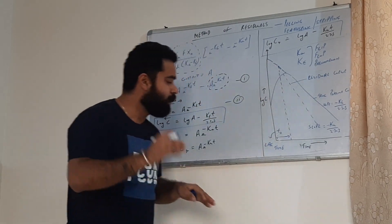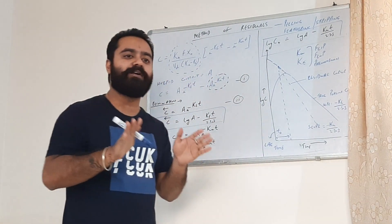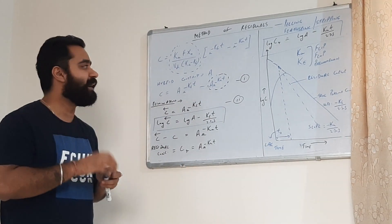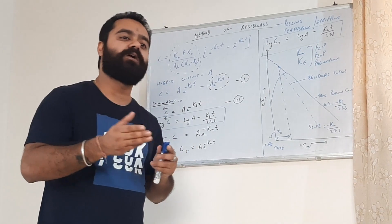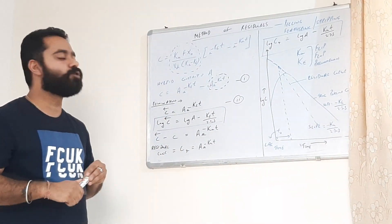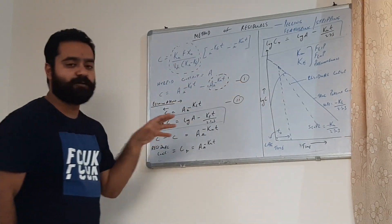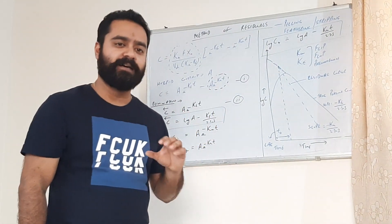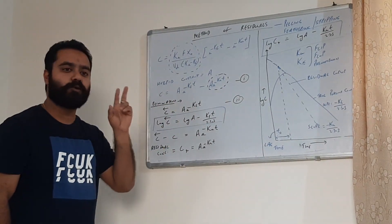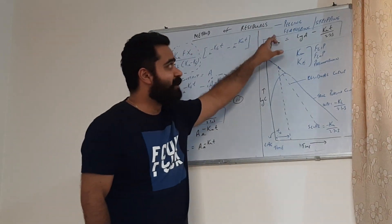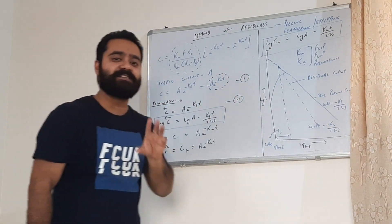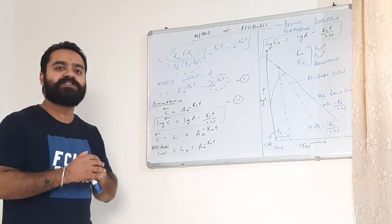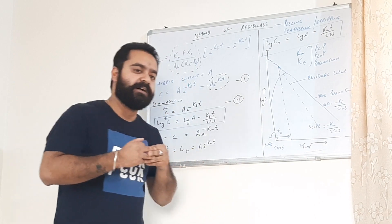The method of residuals, also called the curve fitting method, is best suited for drugs which follow one compartment open kinetics, whether by extravascular administration or IV bolus administration, and are completely absorbed by one compartment kinetics. So this was the method of residuals. The second method for determination of Ka — the Wagner-Nelson method — has already been discussed. Revise both methods. With this, we have almost completed one compartment kinetics. In the next class we shall start with multi-compartment models and two compartment models. Thank you.